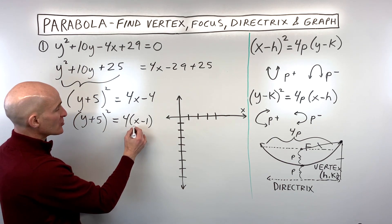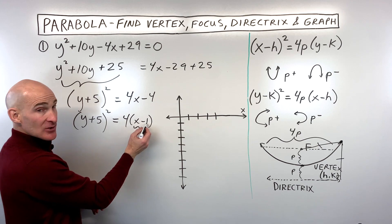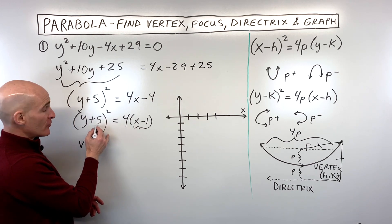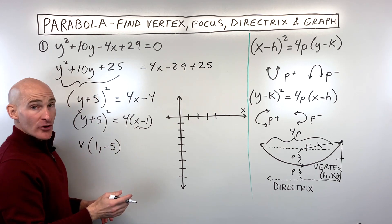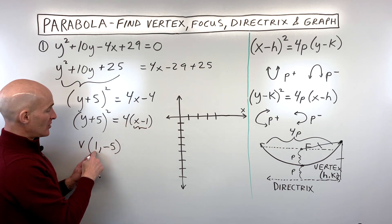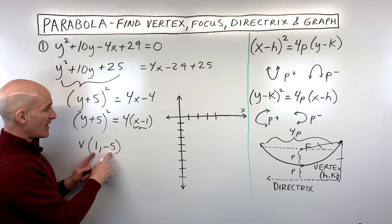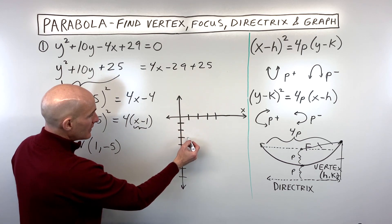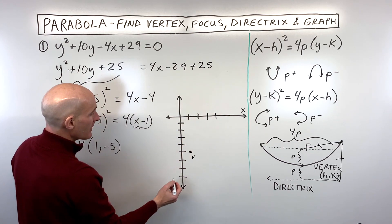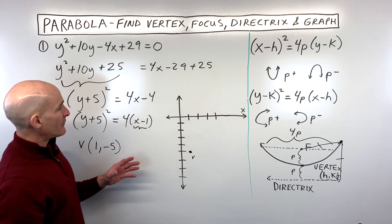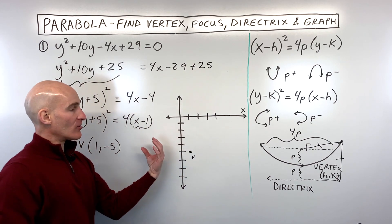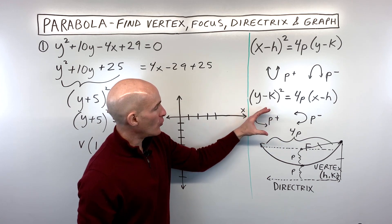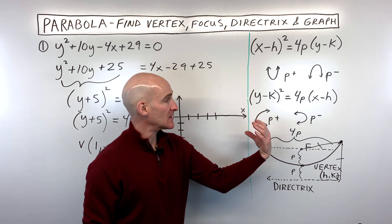Be careful: the x-coordinate of the vertex is grouped with x, giving positive 1, and the y-coordinate is grouped with y, giving negative 5 — the signs are flipped. So the vertex is at (1, −5). Now let's graph it. For a y-squared type, if the p-value is positive it opens to the right; if negative, it opens to the left.